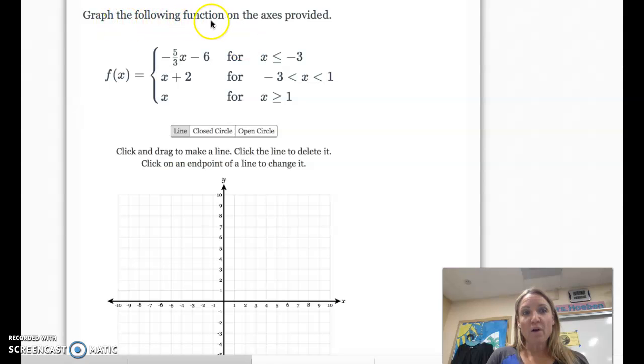So we're going to graph the following function, and we're going to have three parts to this piecewise. So when x is less than or equal to negative 3, we're going to graph this line. When x is between negative 3 and positive 1, we're going to graph this line. And when x is greater than or equal to 1, we're going to graph this line. Okay, so we're going to have three different lines at three different parts.